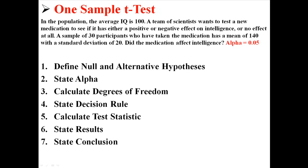So step one is for us to define our null and alternative hypotheses. Then we will state the alpha, calculate the degrees of freedom because this is a t-test, then state the decision rule, calculate the test statistic, state the results, and state the conclusion. So let's get started with that.